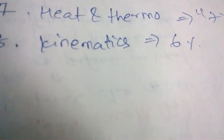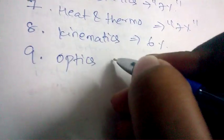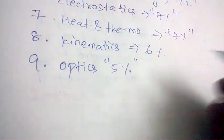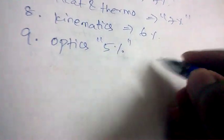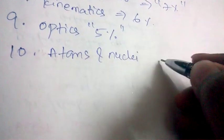Kinematics carries 6% of questions in the question paper. The next important chapter is Optics, from which 5% of questions will be appearing. Atoms and Nuclei also carries 5% of questions.